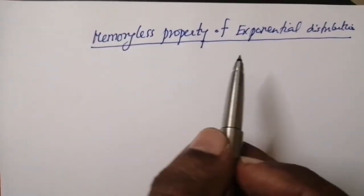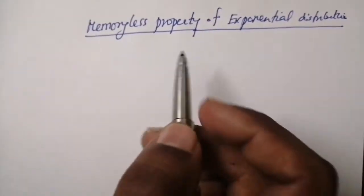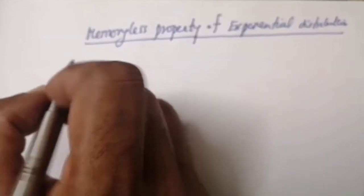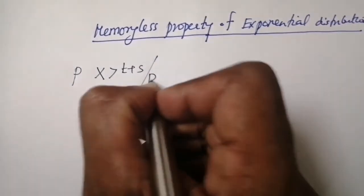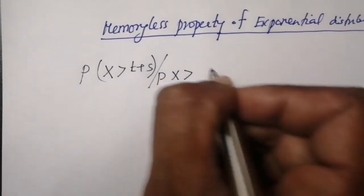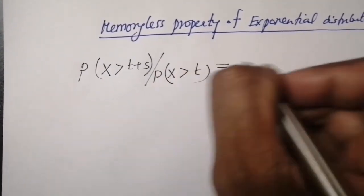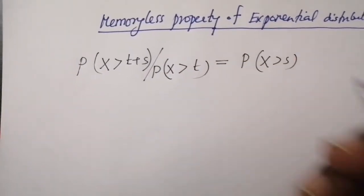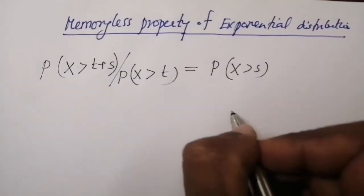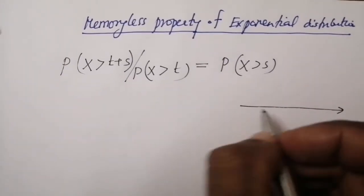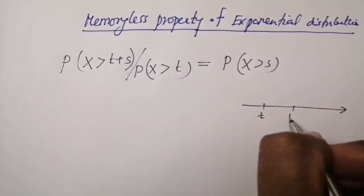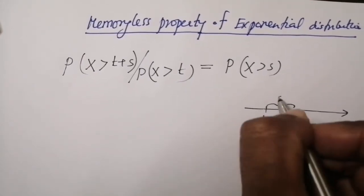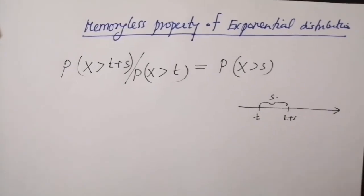A major feature of exponential distribution is its memoryless property. The memoryless property is defined as: P(X > t + s | X > t) = P(X > s). We will now formally prove this memoryless property of exponential distribution.